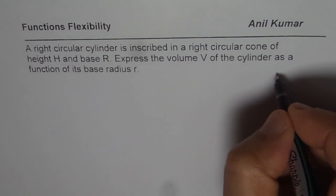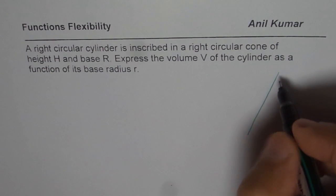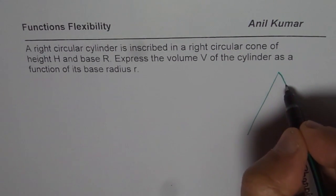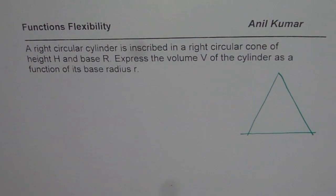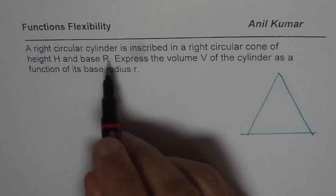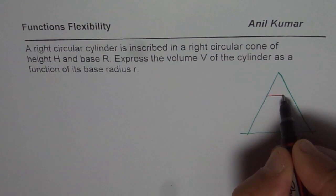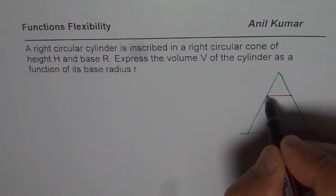Let's make a diagram. I'll make a cross section view of a cone which will be a triangle. The cone is a three dimensional figure but if you cut it across you get a triangle. Now within this cone we have a right circular cylinder inscribed. Let us say this is the cylinder which is inscribed in the cone.